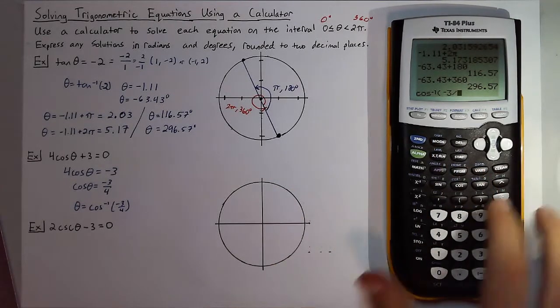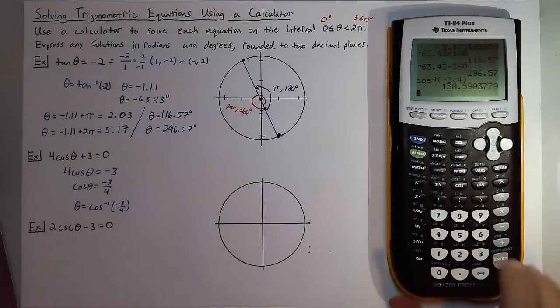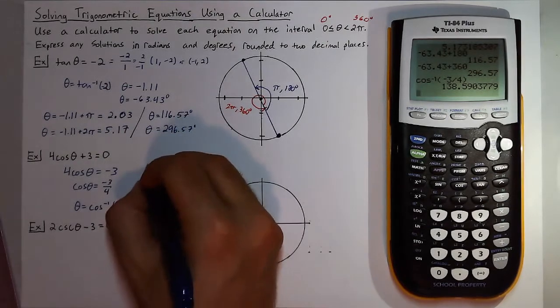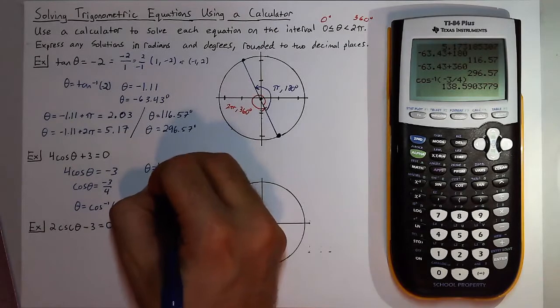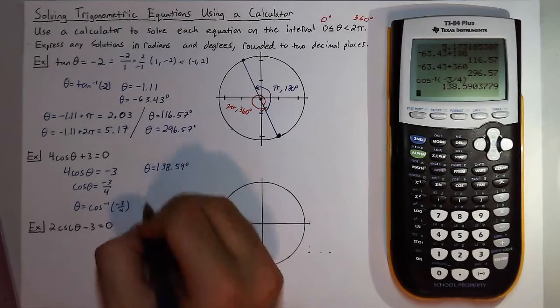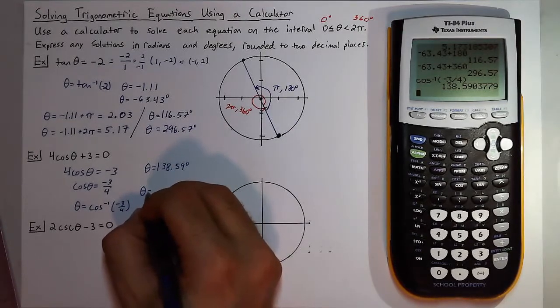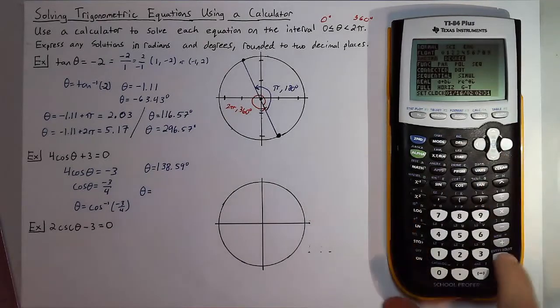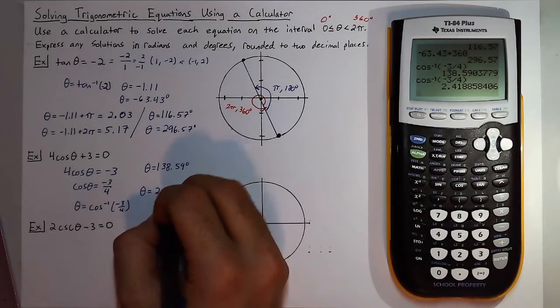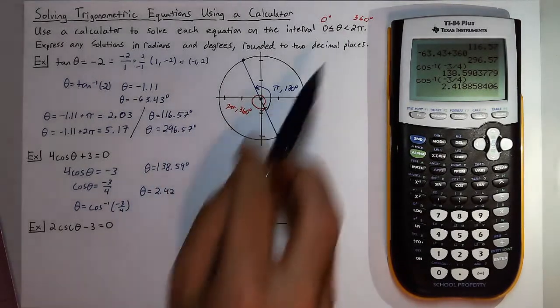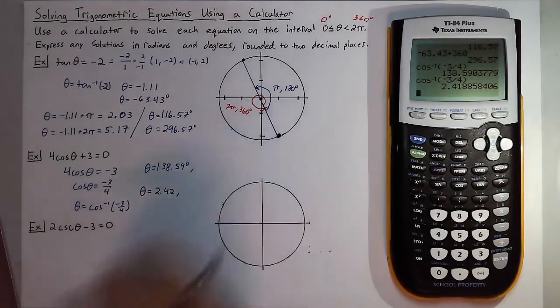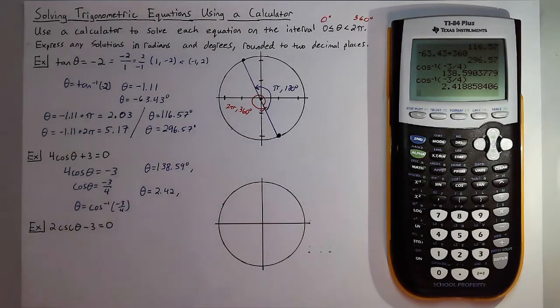Right now I'm in degree mode so I'll give me my degrees first, and good news this is a positive angle between 0 and 360 so I'm already part way there: 138.59 degrees. And then in radians it's the same entry and I get 2.42, which 2 pi is about 6.28 so we're definitely still within that range, but there could possibly be another solution.